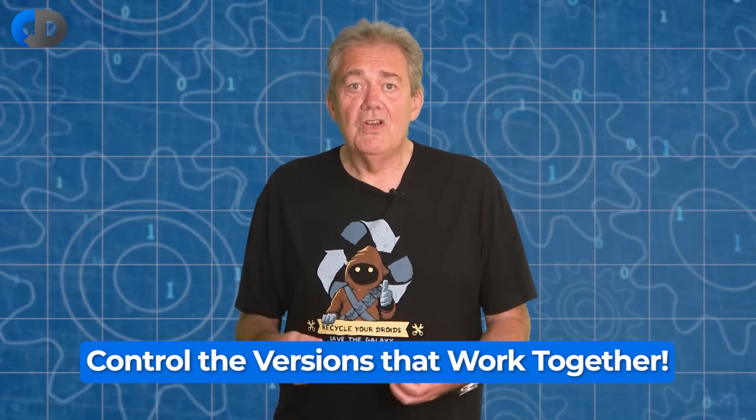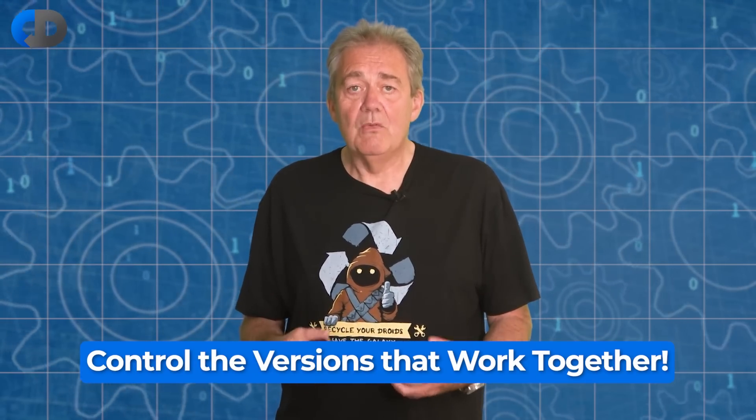but not to version control and define what those versions are. This is the first of my three irrational failures to apply version control adequately. We should use version control to control the versions that work together.